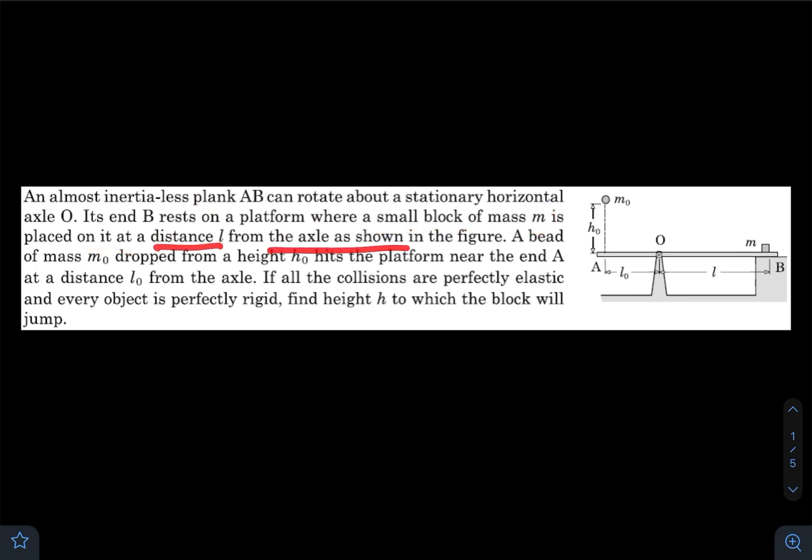A bead of mass m₀ is dropped from height h₀ and hits the platform near end A at distance l₀ from the axle. If all collisions are perfectly elastic and every object is perfectly rigid, find the height to which the block will jump. This mass will come down and hit this